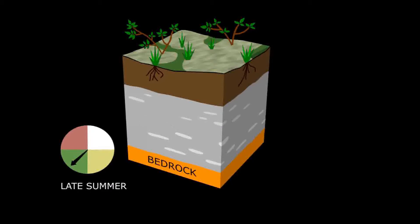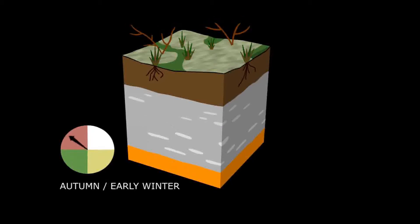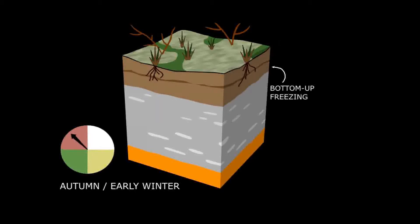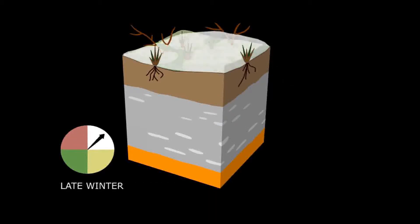In autumn and early winter, the active layer starts to freeze, both from the bottom upwards and from the top downwards. During winter, when the snow arrives, both the active layer and permafrost are frozen.